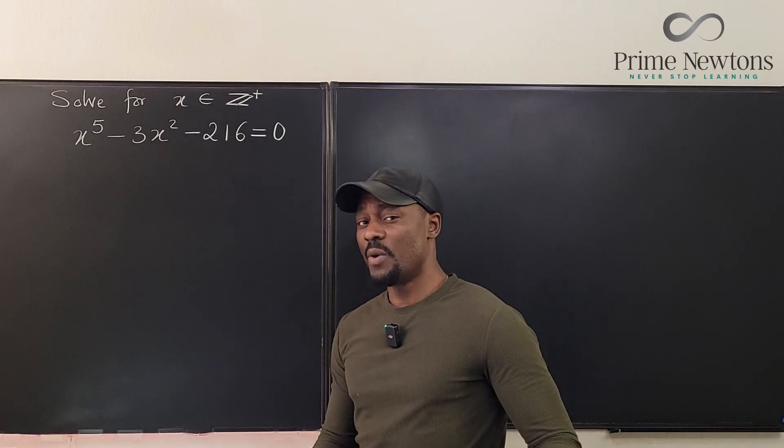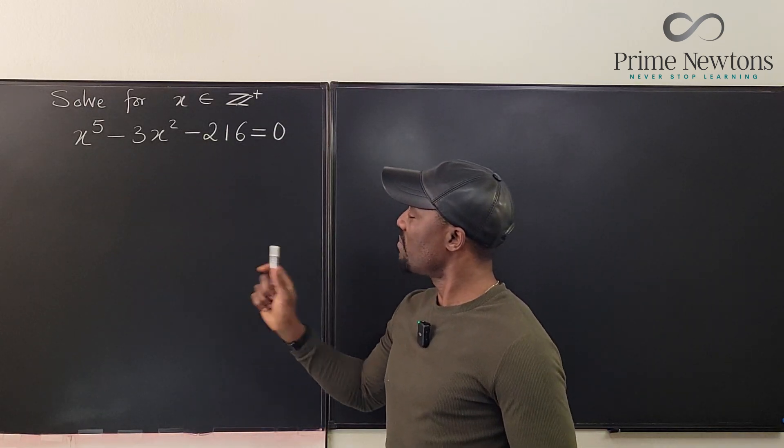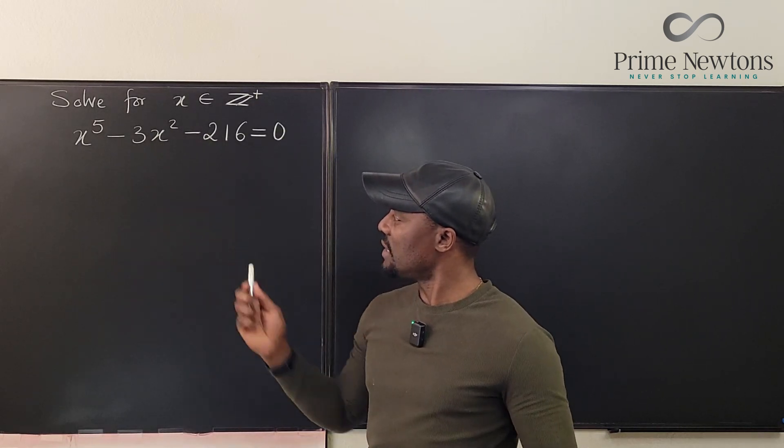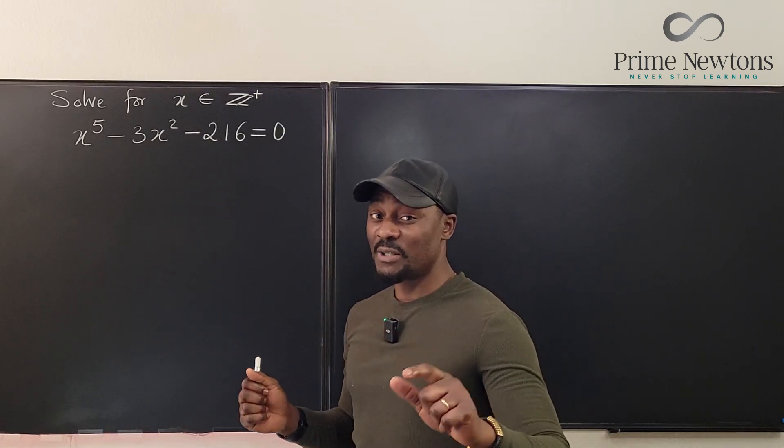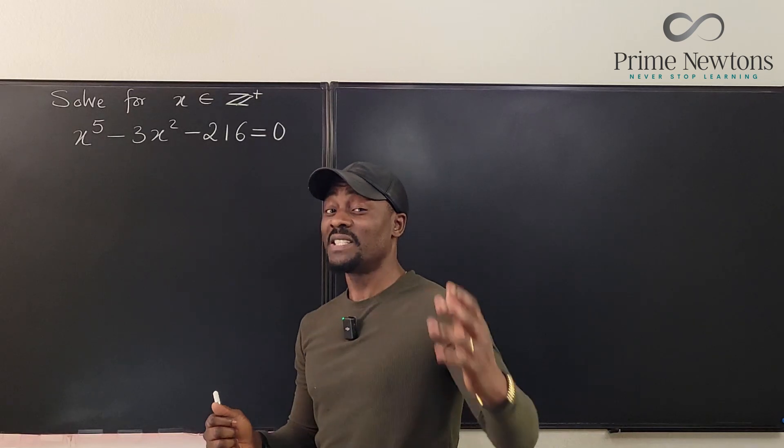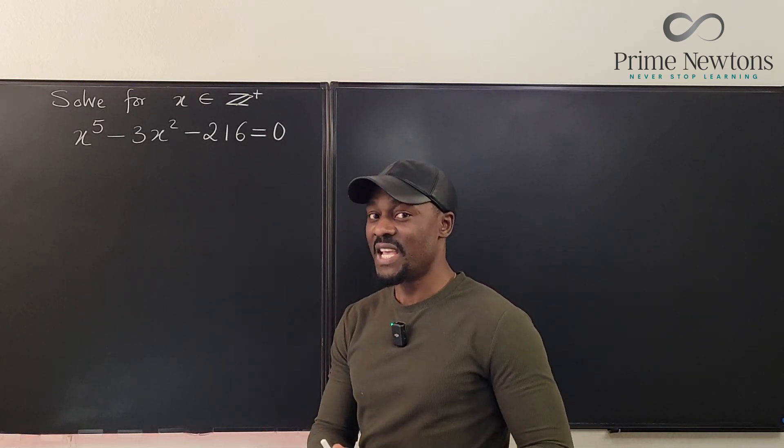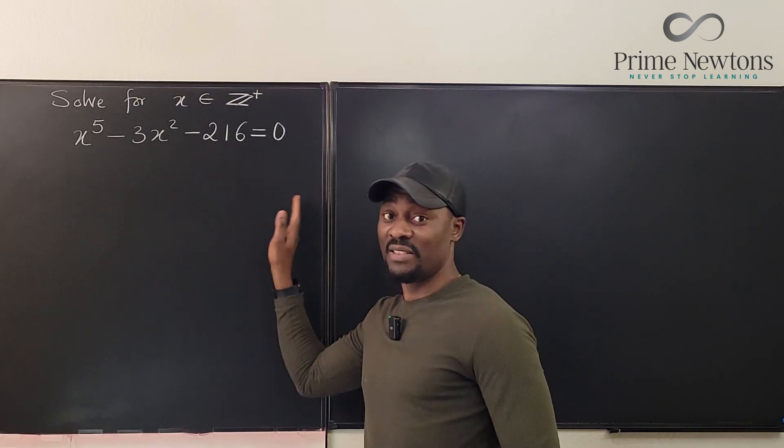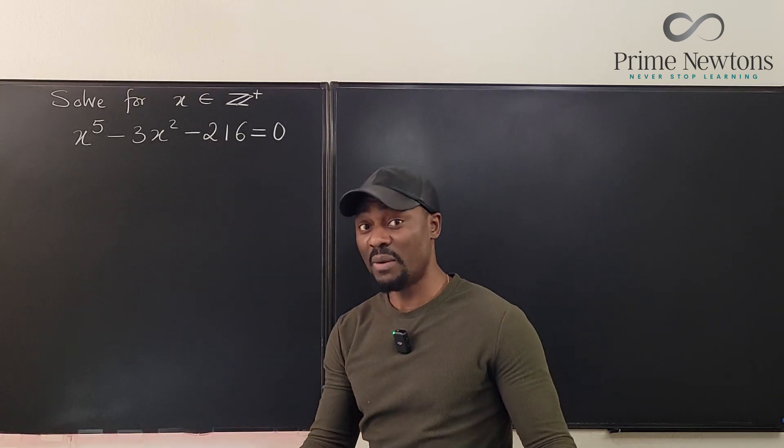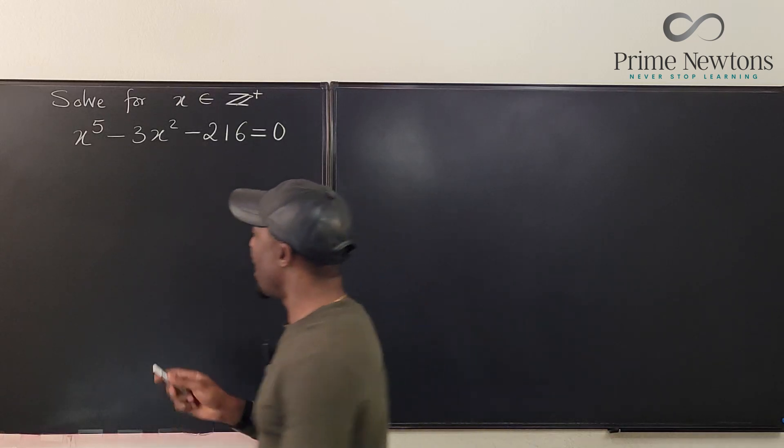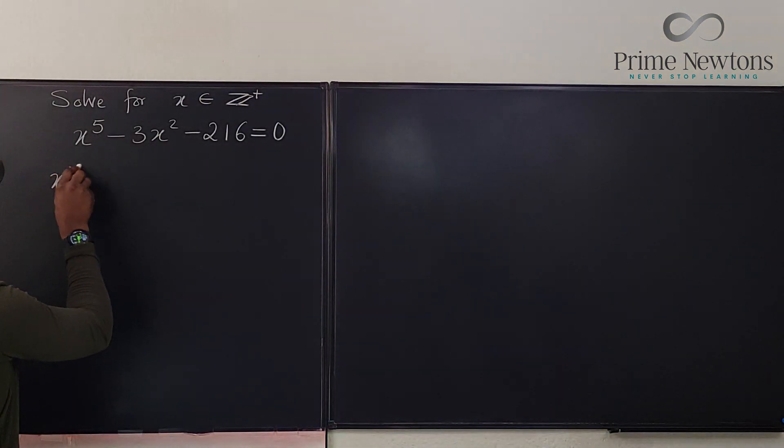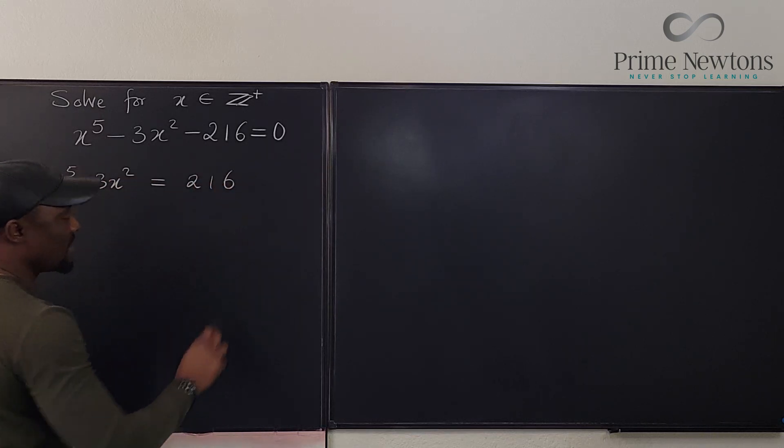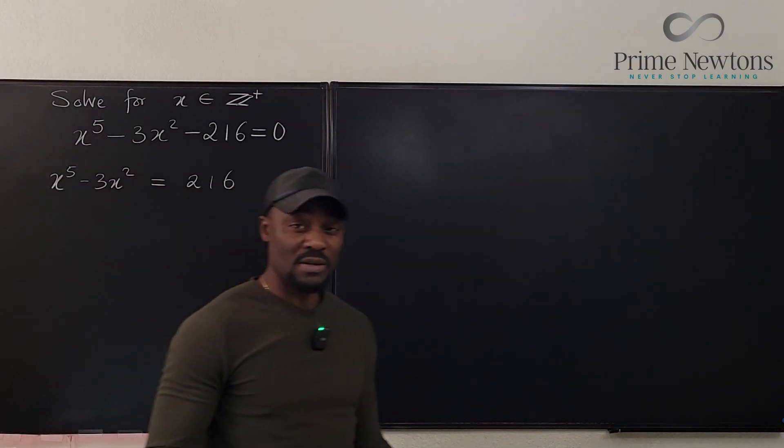Looking at the equation, I have x to the fifth minus 3x squared minus 216 equals 0. I immediately think, can I factor what I see? Because I do not expect to get any other type of answer apart from integers, it is okay for me to move this number over to the other side and try to break them down and see what becomes obvious. I'm going to say that x to the fifth minus 3x squared will be equal to 216.